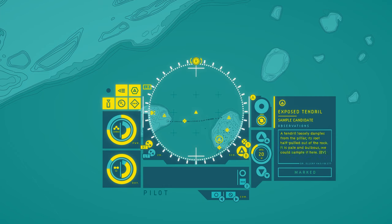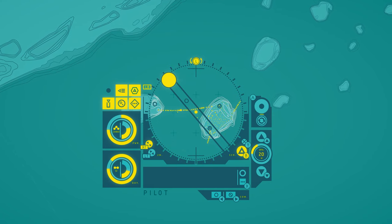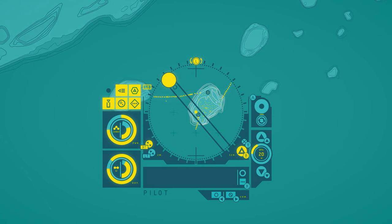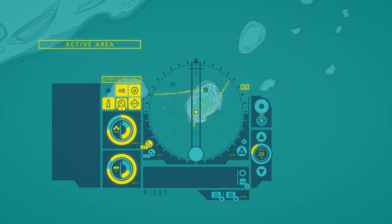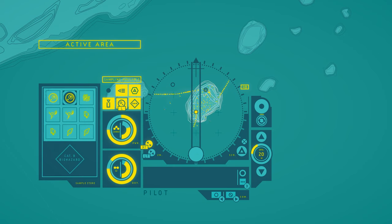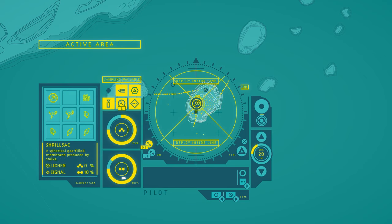Exposed tendril. A tendril loosely dangles from the pillar, its root half pulled out of the rock. It's pale and bulbous. We could sample it here. Another new thing. My god. Okay, I don't need the... Actually, wait, what is this? Shed feather. We're absolutely keeping that. Yeah, that's new. That's new. This is new. So I guess I'll just get rid of the shrill sacks.